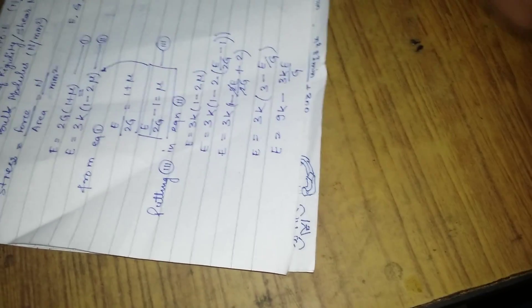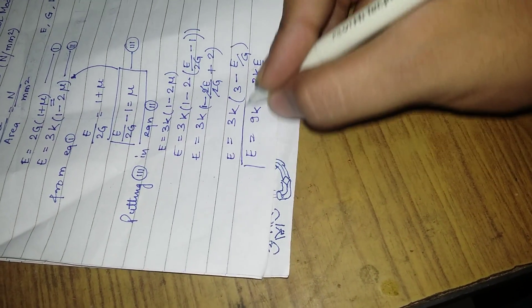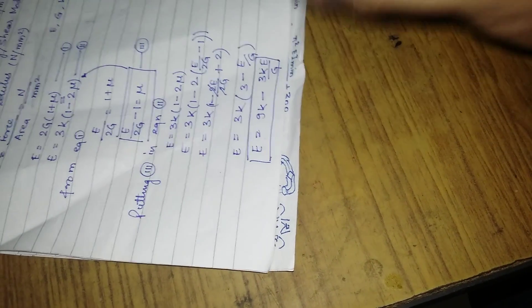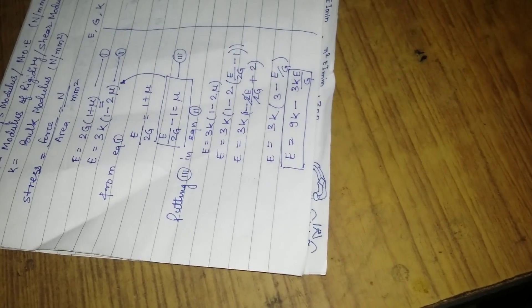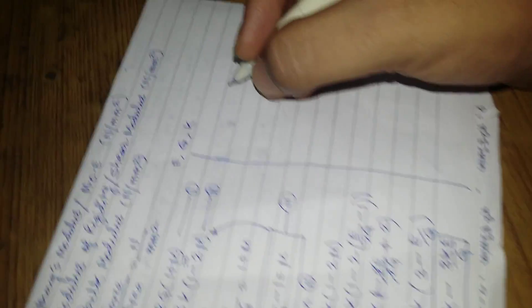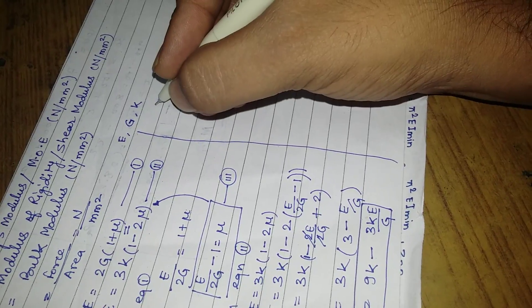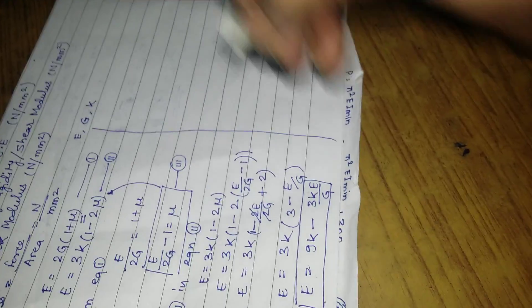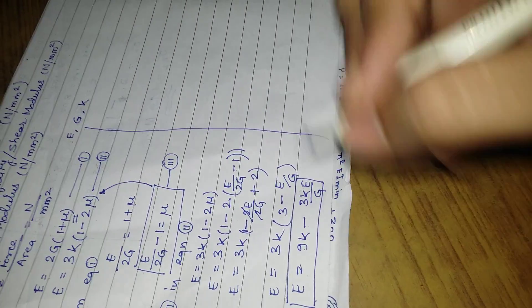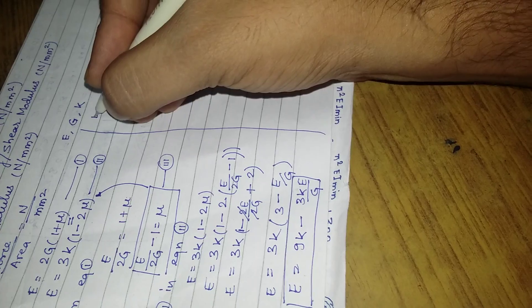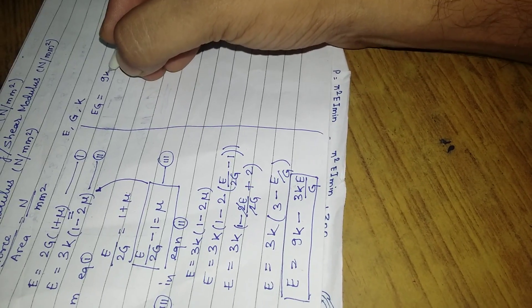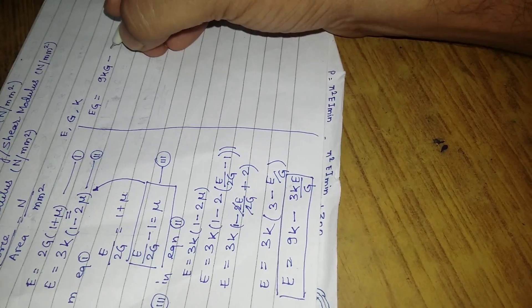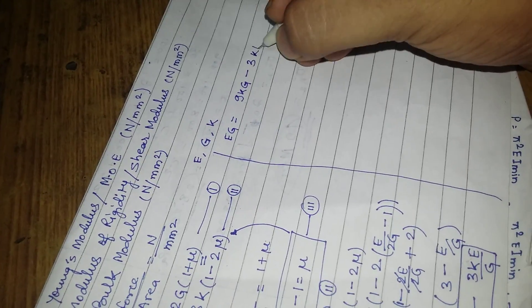E equals 9K minus 3KE upon G. If we multiply both sides of this equation by G, we will get EG equals 9KG minus 3KE.